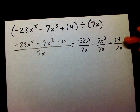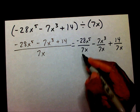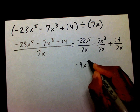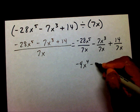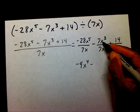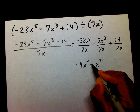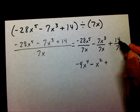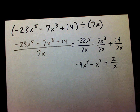We're going to divide every term by 7x and simplify. Negative 28 divided by 7 is negative 4, and x to the 5th divided by x is x to the 4th. 7 divided by 7 is 1, and x to the 3rd divided by x is x squared, so that's negative x squared. And 14 divided by 7 is 2 over x. And here's your final answer.